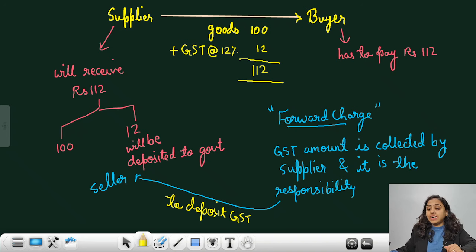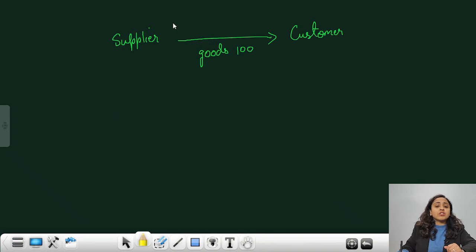Now on the other hand, if we take the example of reverse charge. Here also for example, there is a supplier, seller of the goods or services and a customer buyer. Now goods are sold at 100.